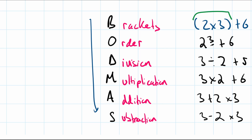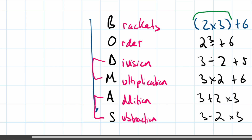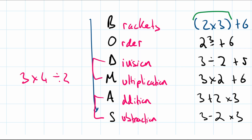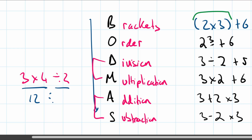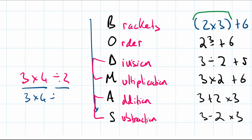One important thing to know is that division and multiplication are interchangeable, and so are addition and subtraction. If you have something like 3 times 4 divided by 2, the order depends on which operation comes first in the equation. Reading left to right, multiplication comes first, so you do 3 times 4 to get 12, then 12 divided by 2 gives 6. Doing it the other way also gives 6 here, but generally follow left-to-right order.